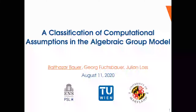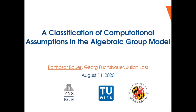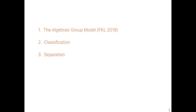Hello everyone, I'm Balthazar Boer and I'm happy to present a classification of computational assumptions in the algebraic group model, joint work with Georg Fuchsbauer and Julian Lohs. First I will recall what the algebraic group model is, then I will explain how we classify many computational assumptions in this model, and finally I will explain the separation results we obtained in this model.